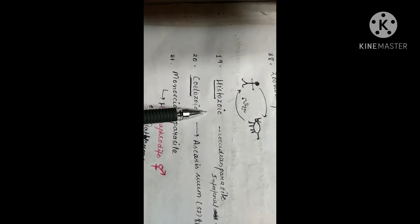The next is histozoic parasite. As the name indicates — histo means tissue — histozoic parasites are those parasites which reside in the tissues. For example, coccidian parasites, which reside in the intestinal mucosa cells. So these can be called histozoic parasites.